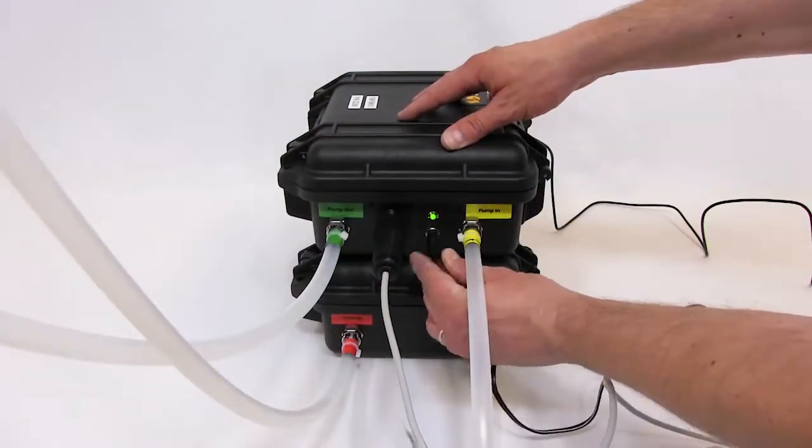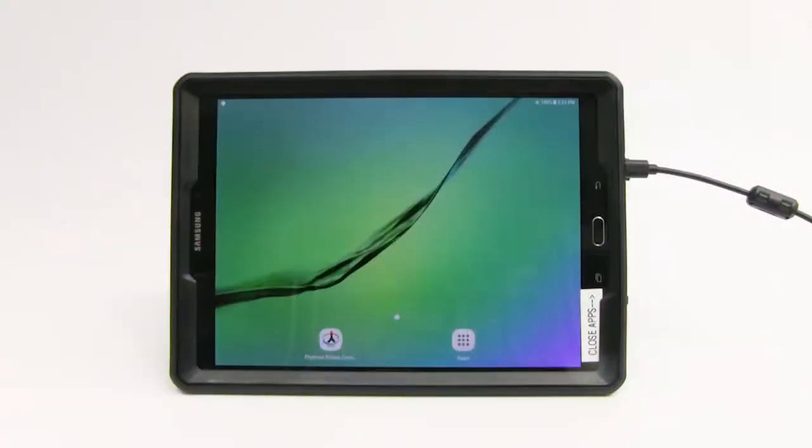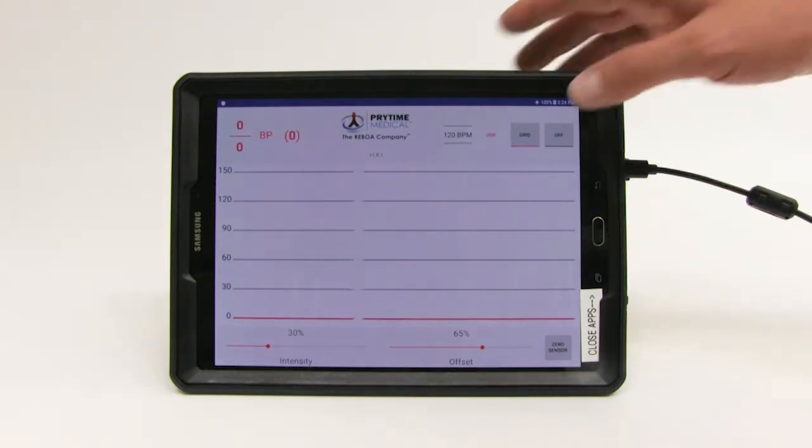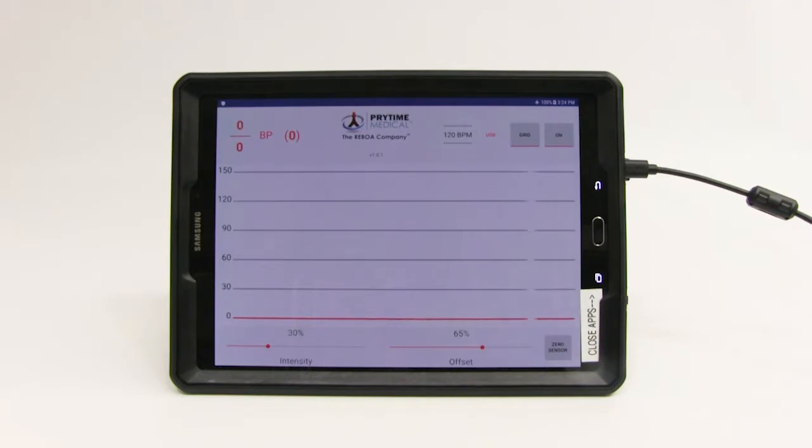Plug the power supply into the pump. The green light on the outside of the pump will light up and the application on the tablet will automatically launch. Once all potential leak points have been checked, activate the pump by pressing the on-off button at the top right corner of the application window.